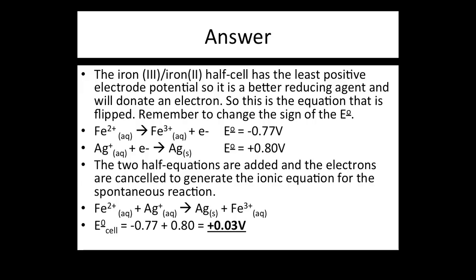The Fe³⁺/Fe²⁺ half cell has the least positive electrode potential, so it is the better reducing agent and will donate an electron — this is the equation that is flipped. Remember to change the sign of the standard electrode potential. The two half equations are added and electrons cancelled to give: Fe²⁺ + Ag⁺ → Ag(s) + Fe³⁺. The standard cell potential is −0.77 + 0.80 = 0.03 volts. Note that the standard cell potential is always the sum of both standard electrode potentials, regardless of whether you have multiplied a half equation to cancel out the electrons.